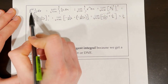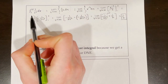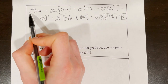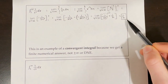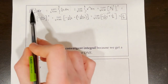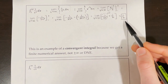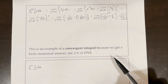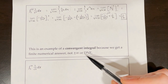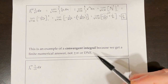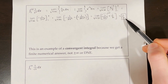The area under the curve from 1 all the way to infinity approaches 1 half — the area does not approach infinity just because our upper bound is infinity. The area is going to be a finite number: 1 half. This is an example of a convergent integral because we get a finite numerical answer, not positive or negative infinity or does not exist. Convergent integrals have answers like 1 half, 5, negative 4 — any finite number.